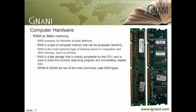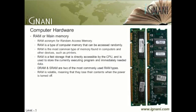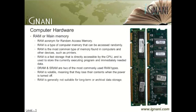Main memory is much faster than mass storage devices like hard disks or optical disks, but is usually volatile, meaning it loses its contents when the power is turned off. It is also quite expensive for a given capacity when compared to most mass storage. Main memory is generally not suitable for long-term or archival data storage. For a detailed tutorial on RAM, please check out our tutorial on the same.